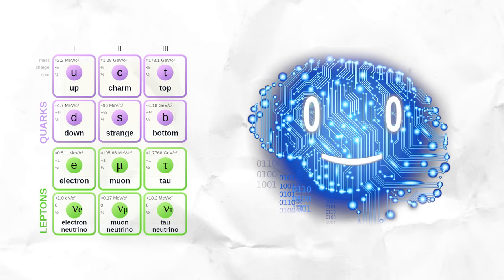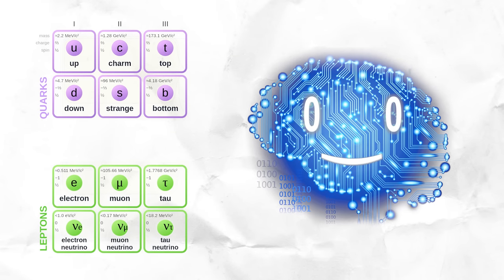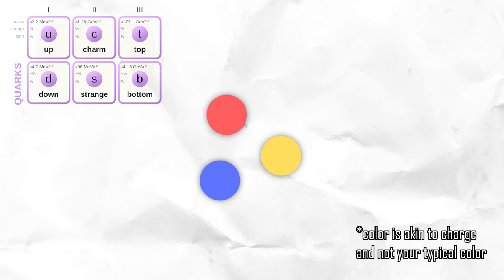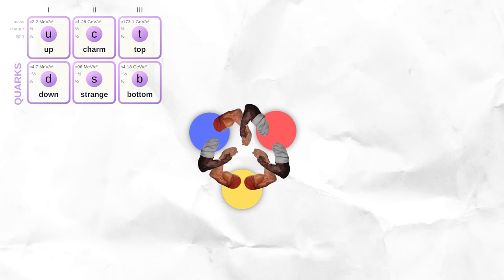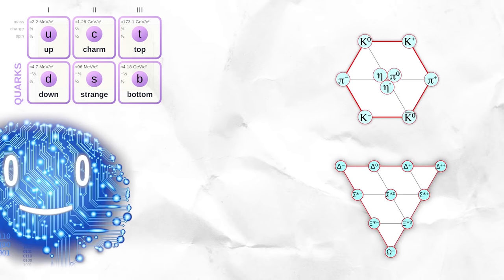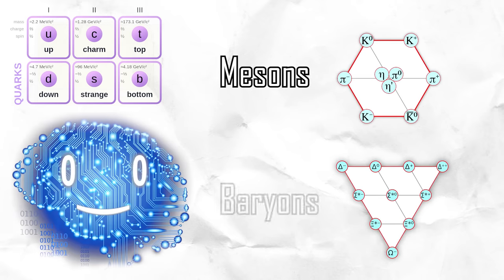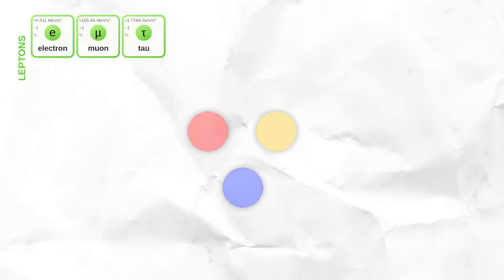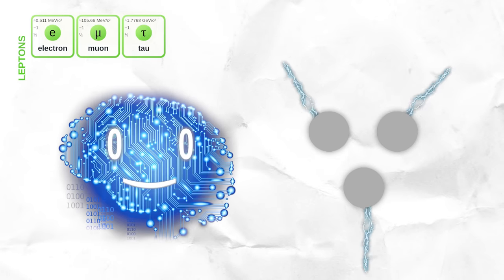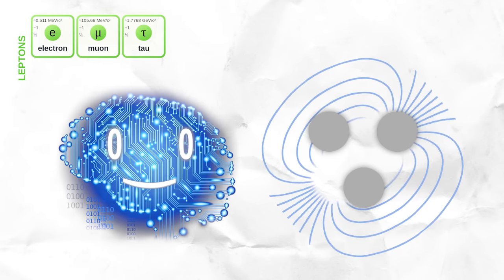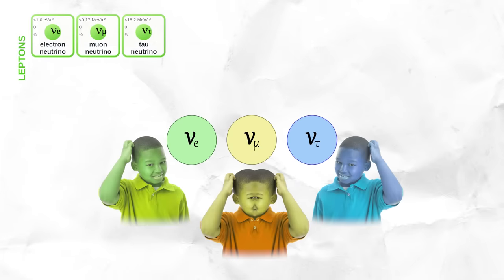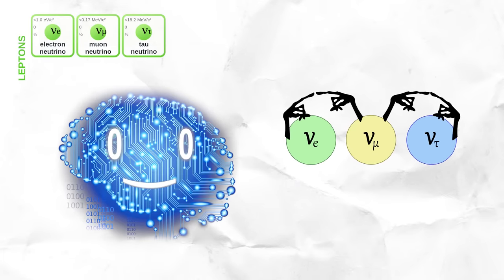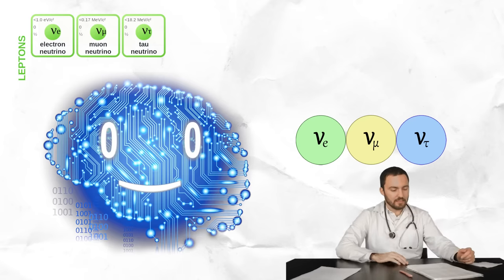Fermions are further split into quarks and leptons. Quarks have a color charge and interact via the strong force to form color-neutral composite particles — mesons and baryons. Leptons do not carry color charge, but they do carry an electric charge and interact electromagnetically. The three neutrinos don't even have an electric charge at all, and thus only interact with the weak force and gravity, making them incredibly difficult to detect.